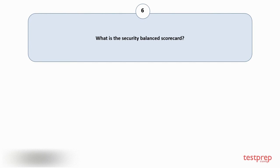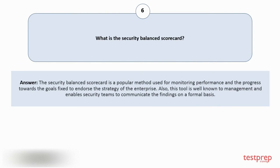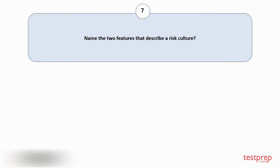The security balanced scorecard is a popular method used for monitoring performance and the progress towards the goals fixed to endorse the strategy of the enterprise. This tool is well known to management and enables security teams to communicate their findings on a formal basis. Question number seven: Name the two features that describe a risk culture.